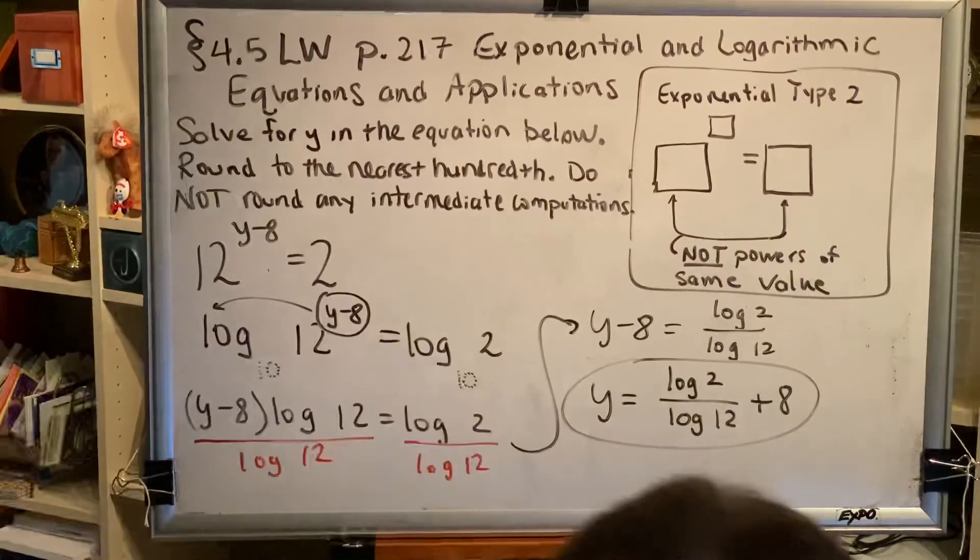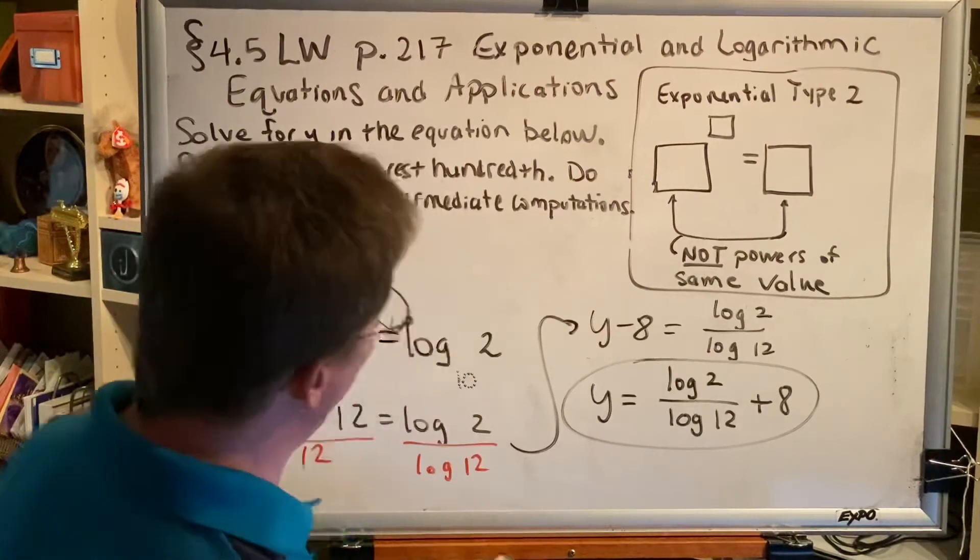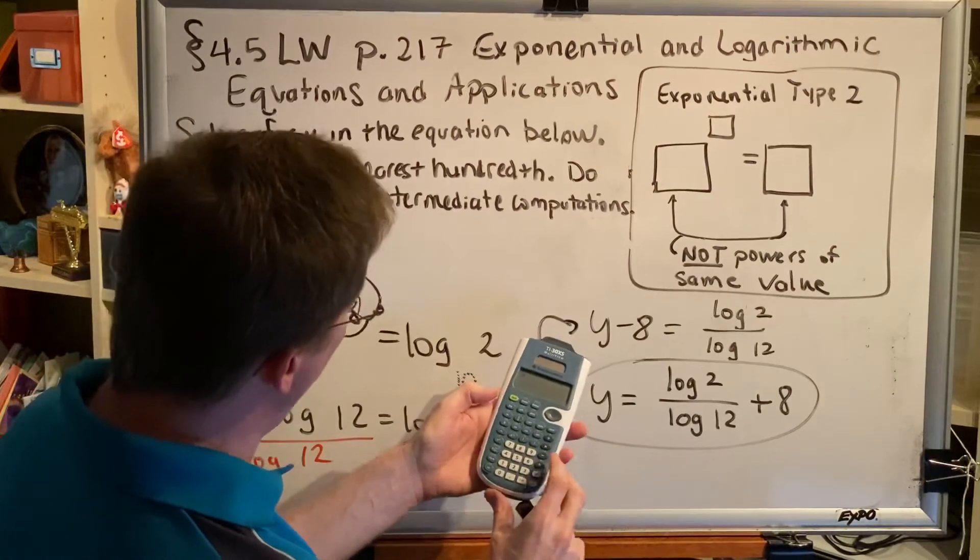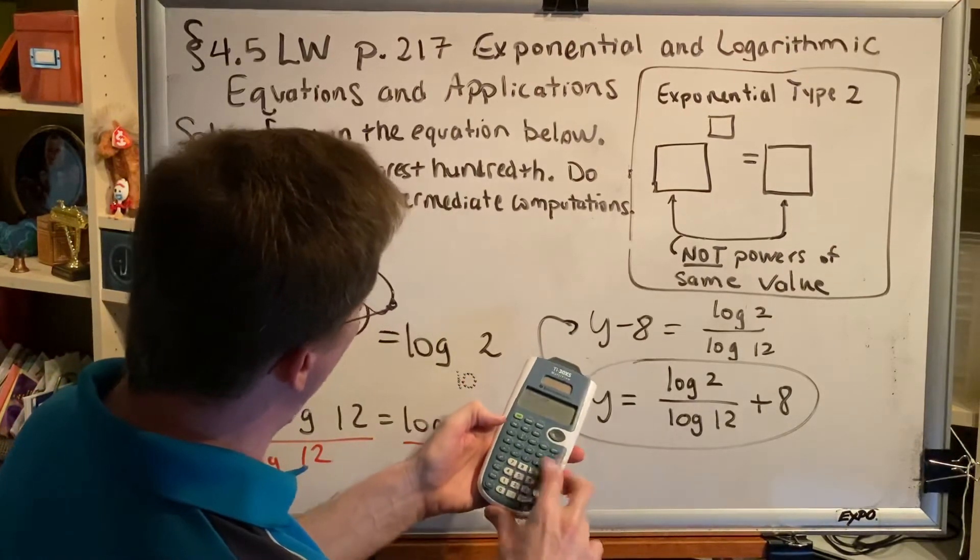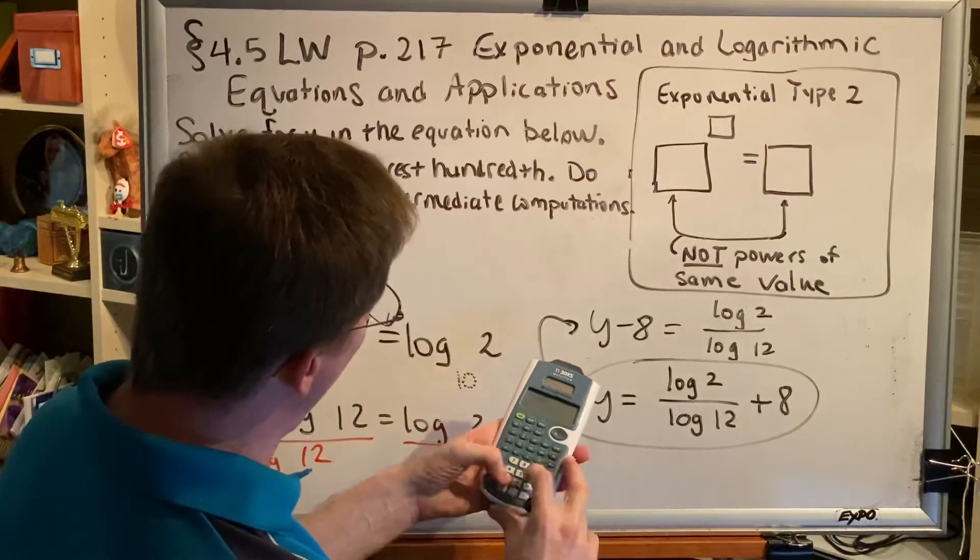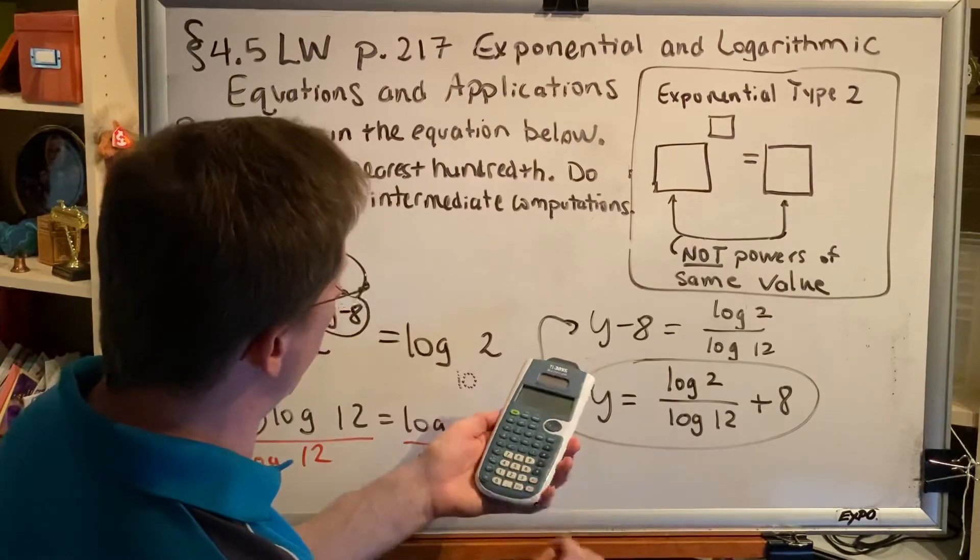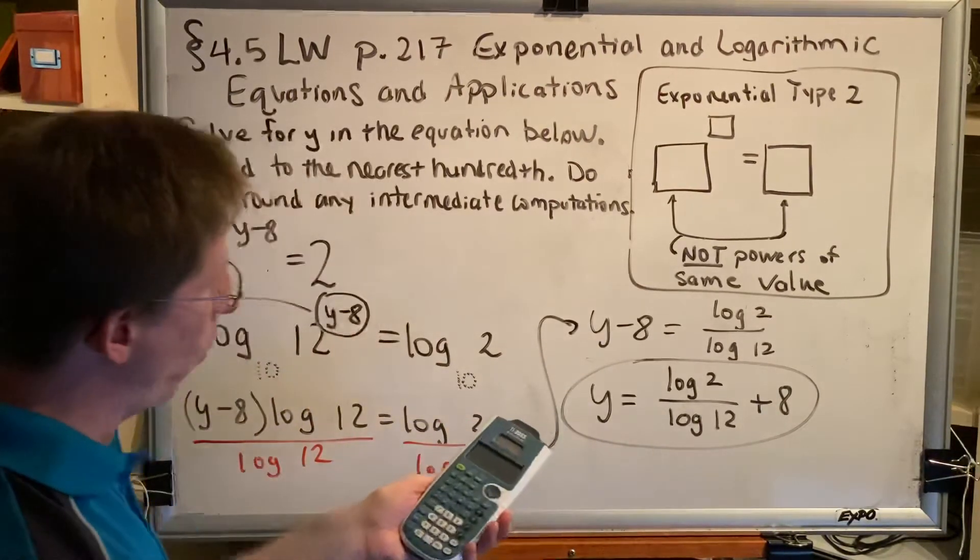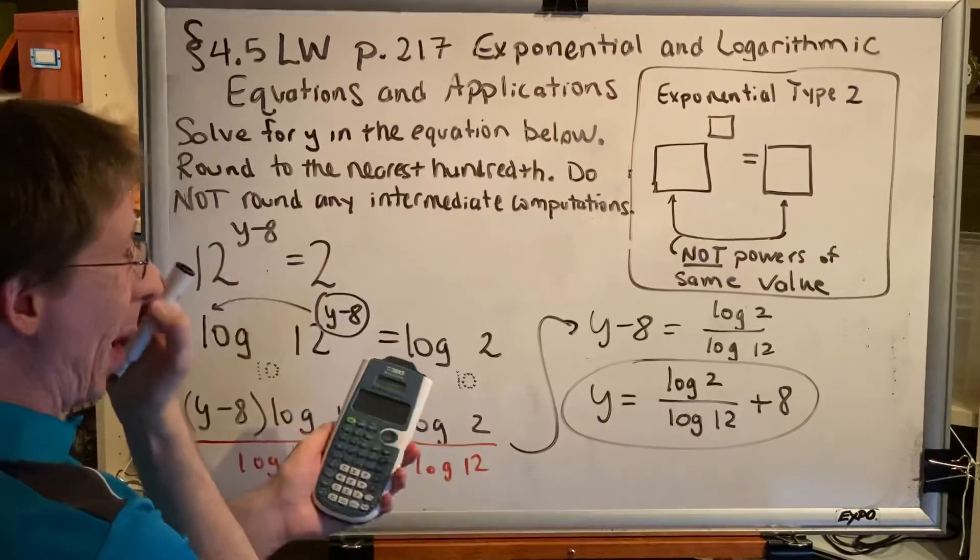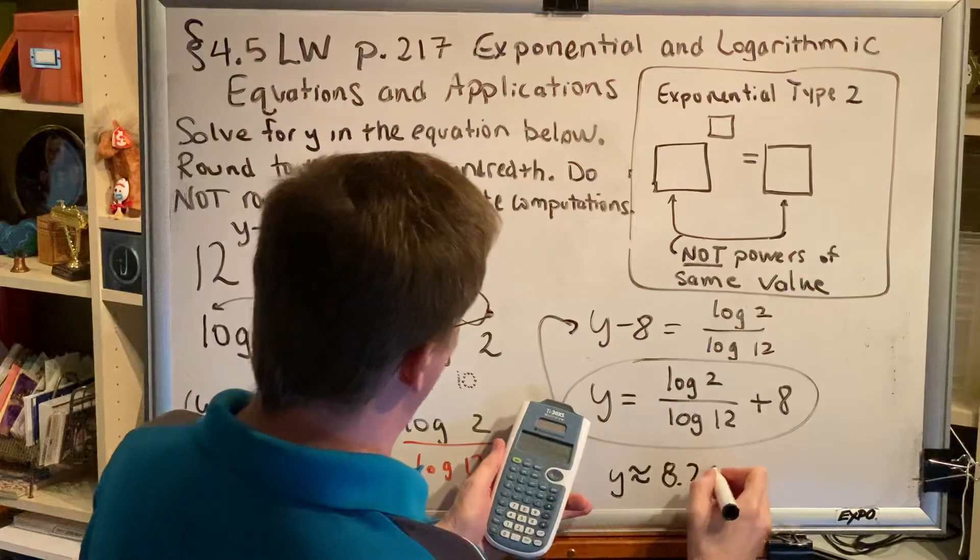Now we put it in our calculators. I'm going to make a fraction here. I'm using the multi-view calculator, so n over d makes a fraction. In the numerator I'll put log of 2 close parentheses, down arrow. In the denominator I will put log of 12 close parentheses, right arrow, and then plus 8 equals. And I get the value 8.278942946.